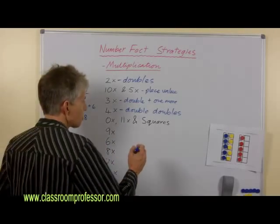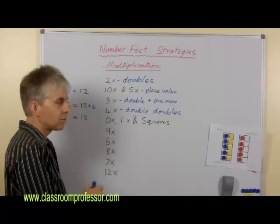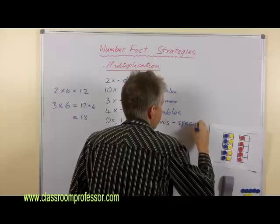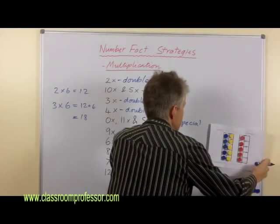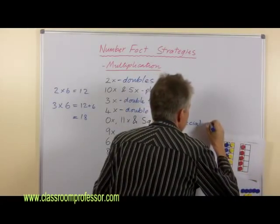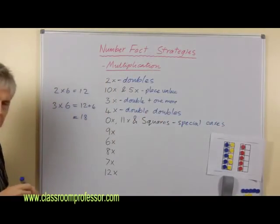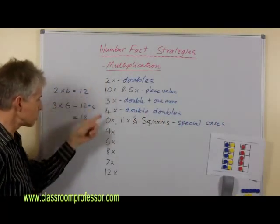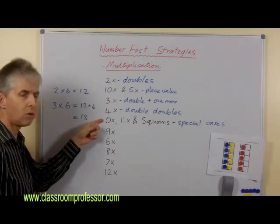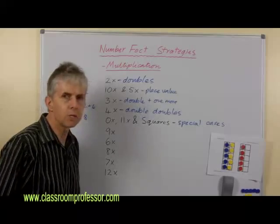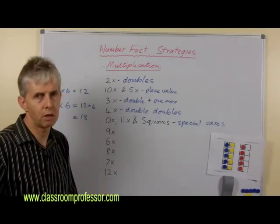And the last one for today is the zero times eleven times and squares. We've bundled all those together and we say that those are special cases. By the way, if you're going to cover the ones, you might notice there's no one times in there. They would belong in here as well and that's another special case.